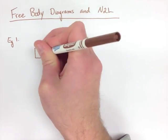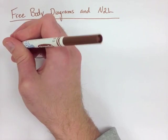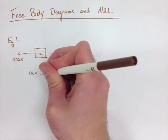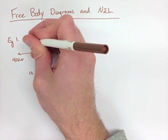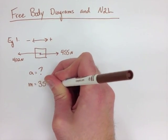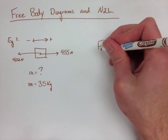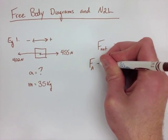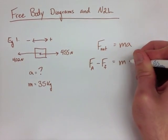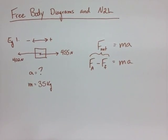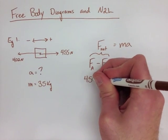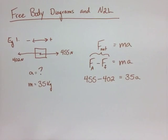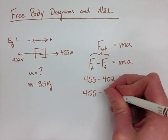we have a force being applied of 455 Newtons in one direction, and friction opposing it at 402 Newtons in the other direction. We want to find our acceleration, we've labeled a positive and negative, and we know our mass is 35 kilograms. So we have our force net is equal to mass times acceleration. Now our net force is our force applied minus our force of friction. So we put in our two forces, and we still have it equal to 35a, or our mass times acceleration.